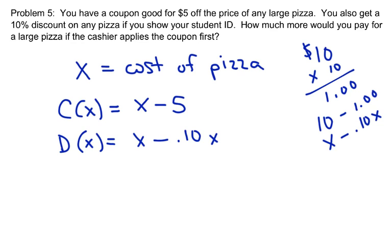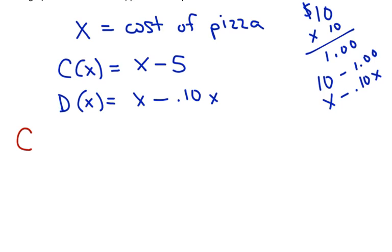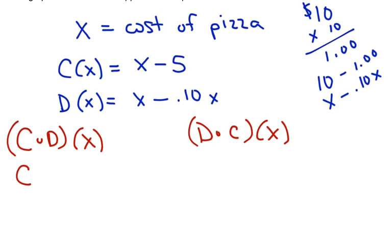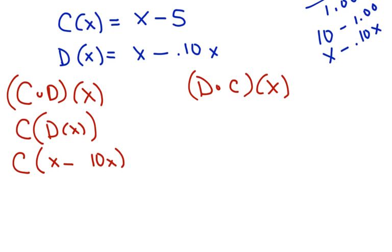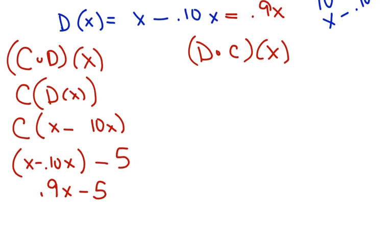Okay, so now we're going to do a composition of functions, and we're going to have to do both directions. One is going to be c of d, and the other one is going to be d of c. So let's start with this one. The coupon, if I plug in the discount first, the discount is x minus .10x. I'm going to plug that into c. c is x minus 5, so it's x minus .10x. Well, x minus .10x, I probably should have done this up here, is .9x because they're like terms. I should have simplified them. So that's the price of the pizza if you apply the discount first, then the coupon.